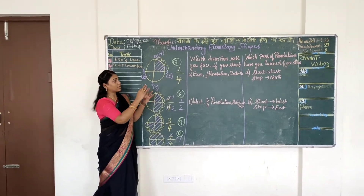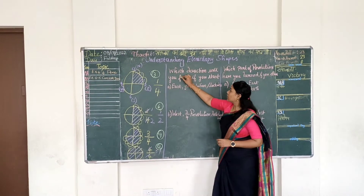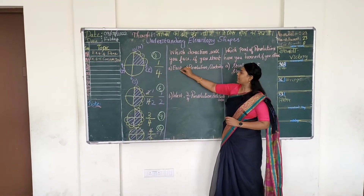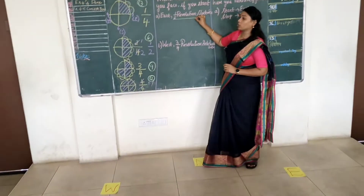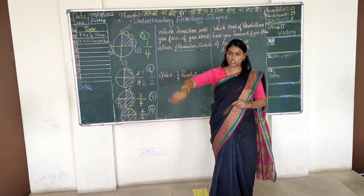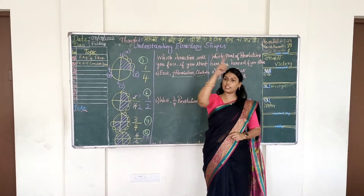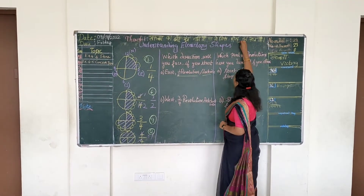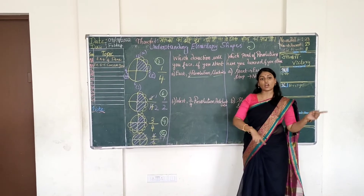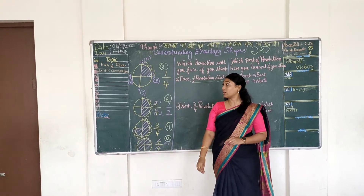In such a way, let us solve the sums in exercise 5.4. The first question is: which direction will you face if you start at east and make half a revolution clockwise? Do you know what clockwise means? The clock moves this way — clockwise. The opposite direction is anticlockwise.